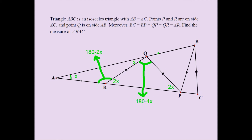So this is 180 minus 4X. Now, what's the measure of this angle? All three angles add up to 180. From 180, if you subtract this and this, you're going to get 3X. The calculation is 180 minus (180 minus X) minus X, and that turns out to be 3X. So this angle is 3X, and because of the isosceles triangle, this one is 3X as well.